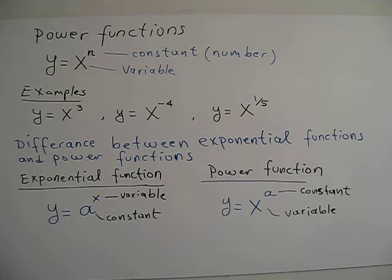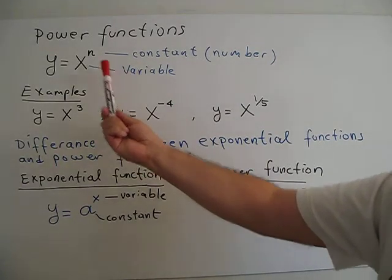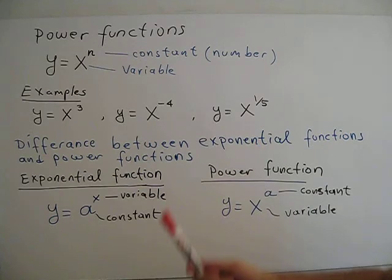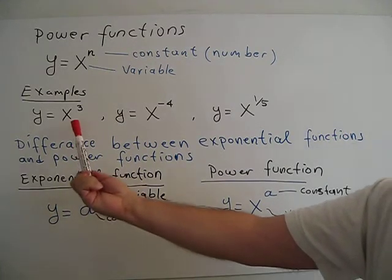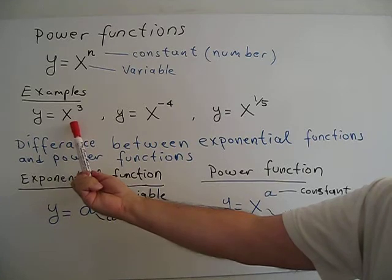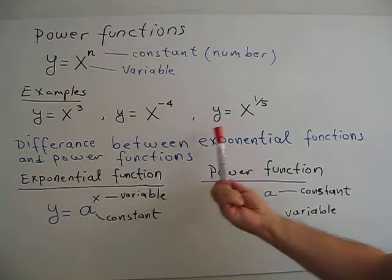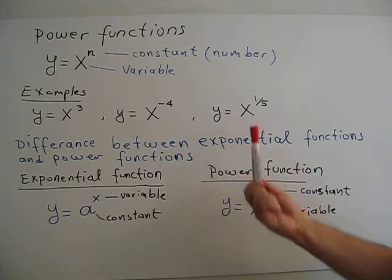A power function has the form y = x to the power n, where x is the base and is the variable, and n is the exponent and is constant — it can be any number. Typical examples of power functions are: y = x³, y = x to the power negative 4, and y = x to the power 1/5.